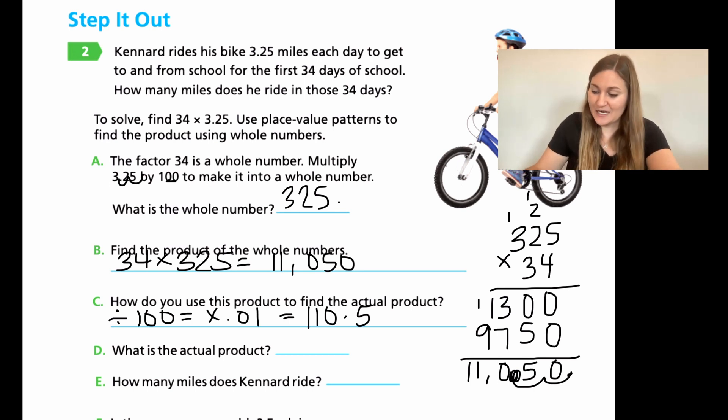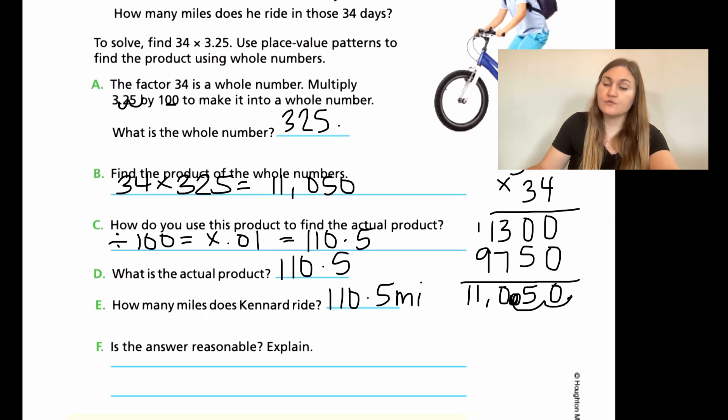So for D, what's the actual product? The actual product is 110.5. How many miles is that? 110.5 miles. Is the answer reasonable? Yes. Because if I were going to estimate my 3.25, I said was just 3. And then my 34, let's just call it 30 for easy math. It's going to be somewhere around 90. But I know that both my 34 and my 3.25 are bigger. So it makes sense that my 110.5 is bigger as well. So yes, it is reasonable. Alright, go ahead and finish up the rest of your prompts for this lesson. And I'll see you back for lesson six.